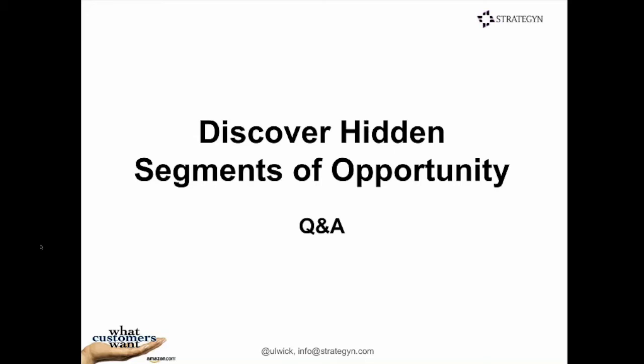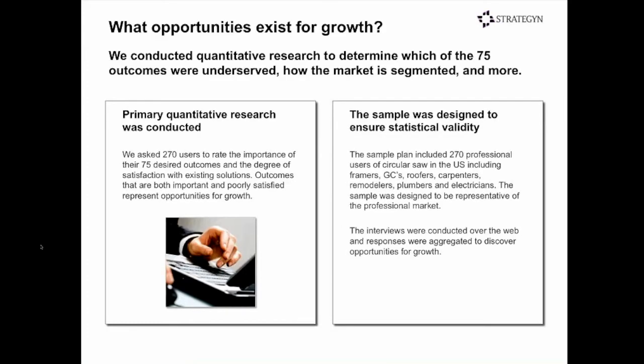Next we'll talk about the quantitative portion. The segmentation begins by collecting statistical data. In the case of Bosch, we had 75 different outcomes and asked 270 users — framers, general contractors, roofers, carpenters, remodelers, and so on — to tell us how important each outcome was when last using their circular saw and how satisfied they were with the product they were using, whether DeWalt, Makita, or another brand.